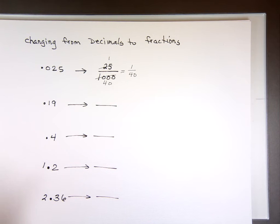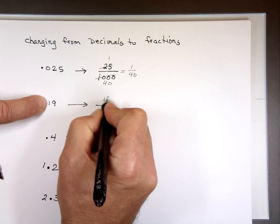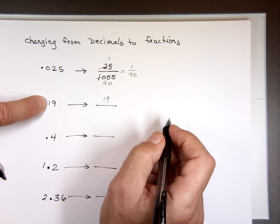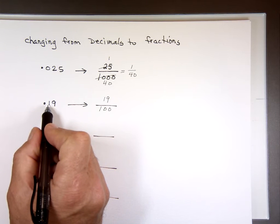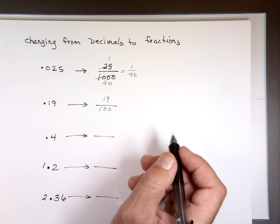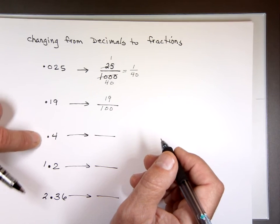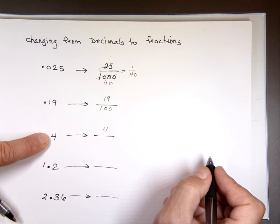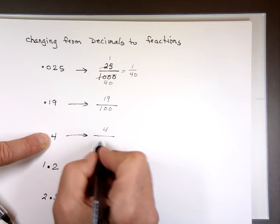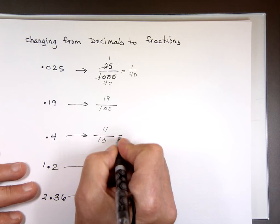Let's try the 19 or 0.19. Write the number without the decimal point. 19 over what? 100. Why 100? You have two digits to the right of the decimal point. Can I simplify that? No. This one. The 0.4. Write the number without the decimal point. 4. Over what? How many zeros? 1, 0. One digit? 1, 0. Can I simplify 4 over 10? Yes. To what? 2 over 5.